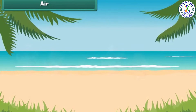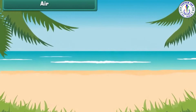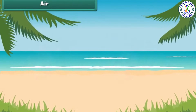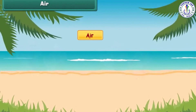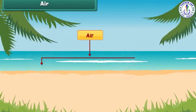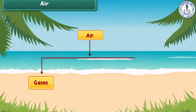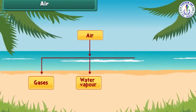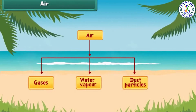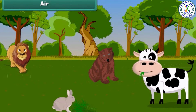Now let's learn about these parts of Earth in detail. At first, let's talk about air. Air, as we know, is present around us everywhere. It contains gases, water particles, which are also called water vapors, and dust particles. Animals and plants breathe air to live.